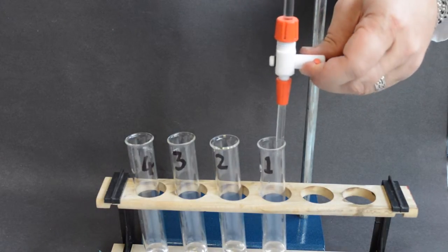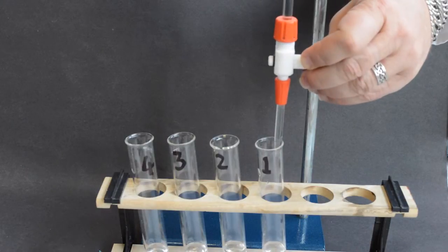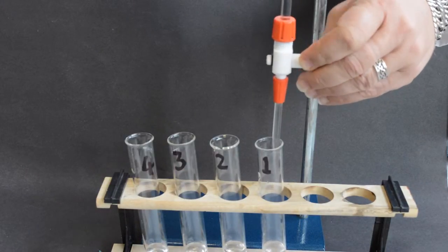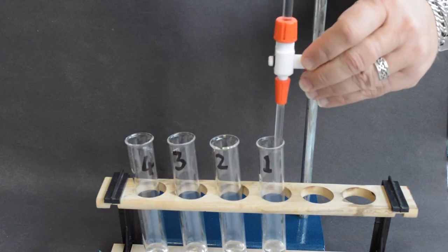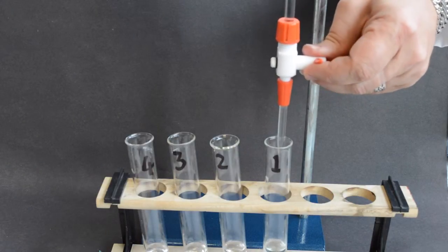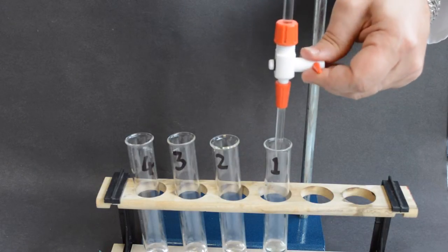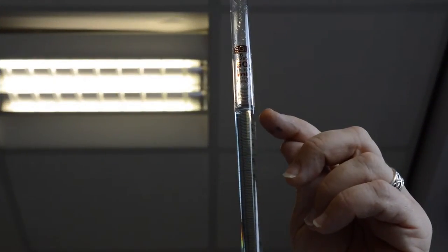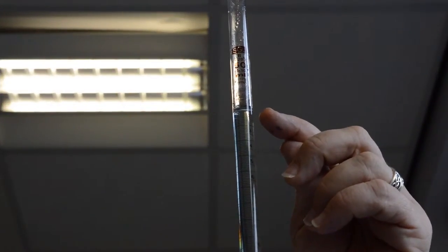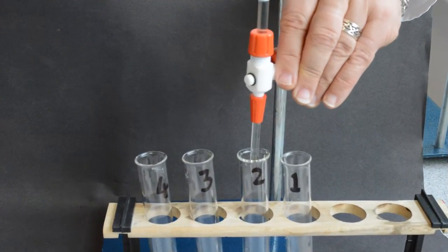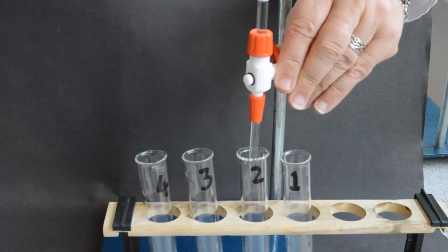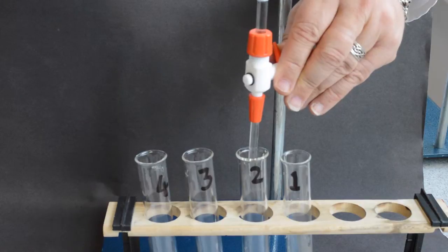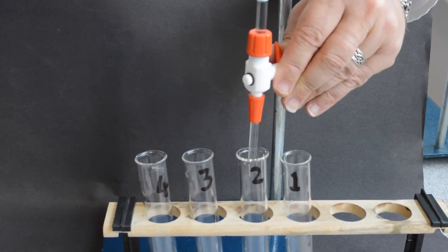Then release one milliliter of copper sulfate into the tube labeled number one. Then note down the value of the volume left in the burette. Repeat this step for tube number two, releasing two milliliters into this tube.